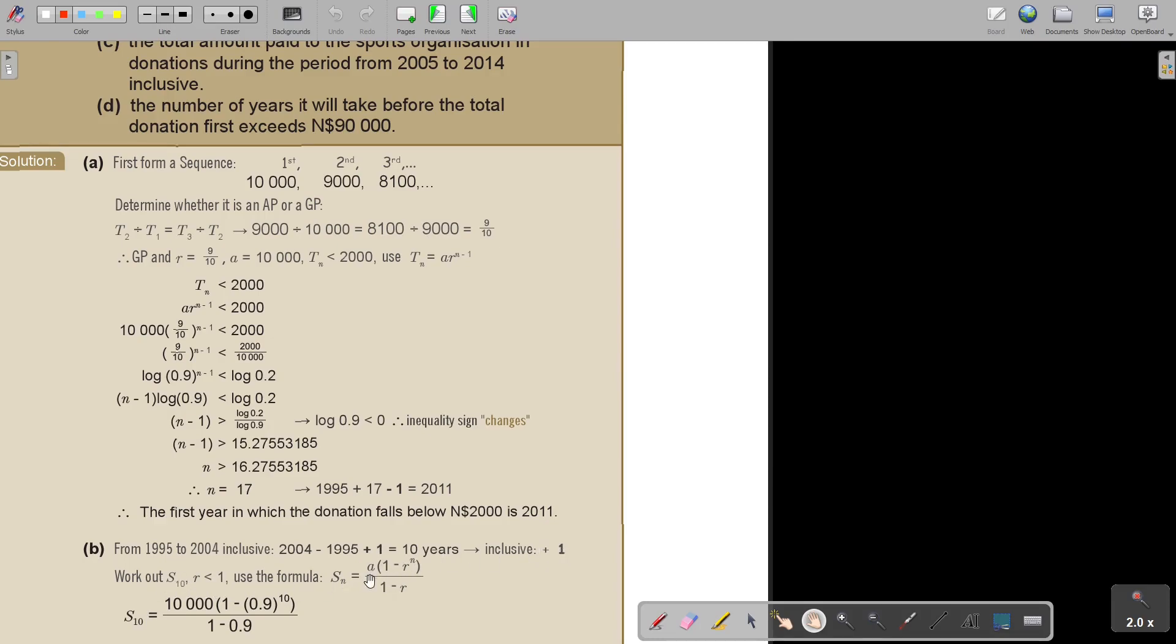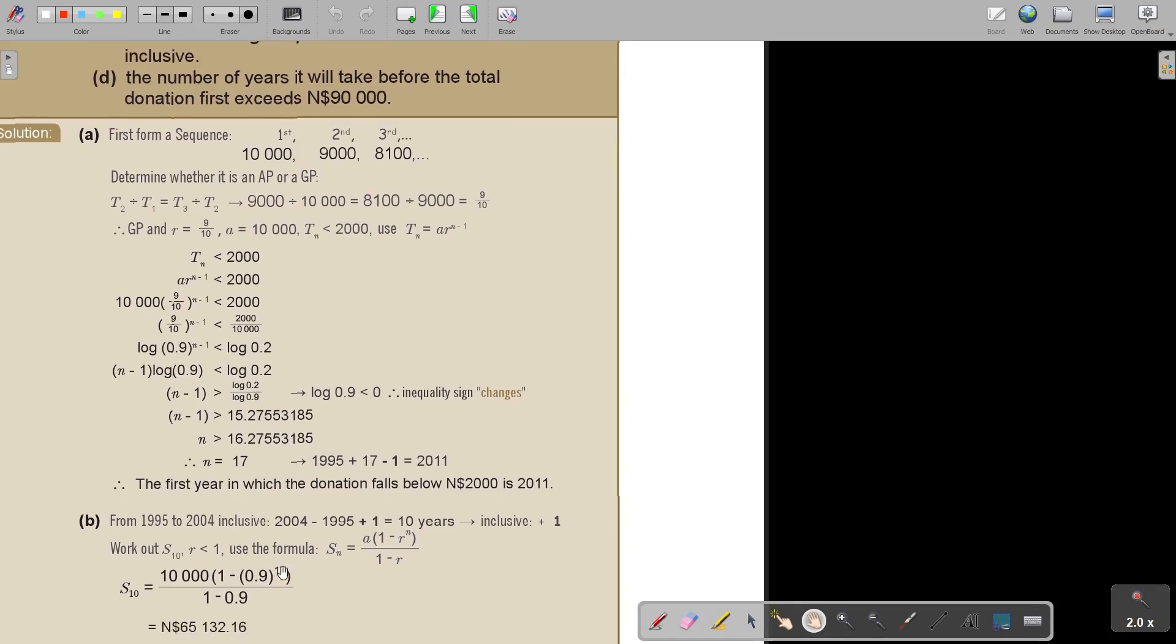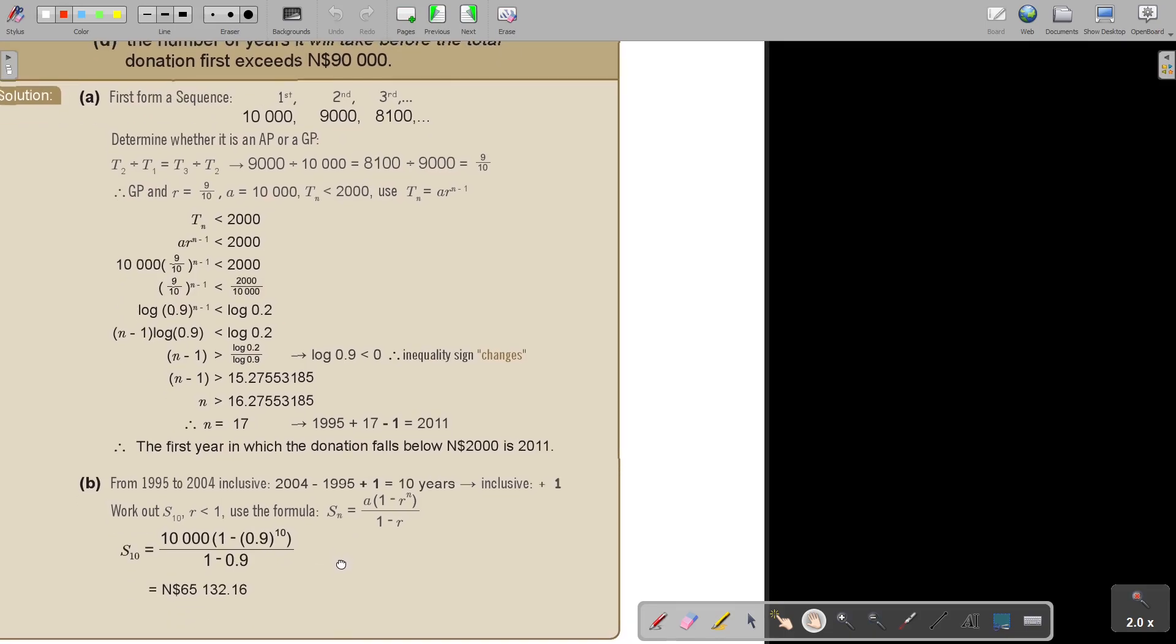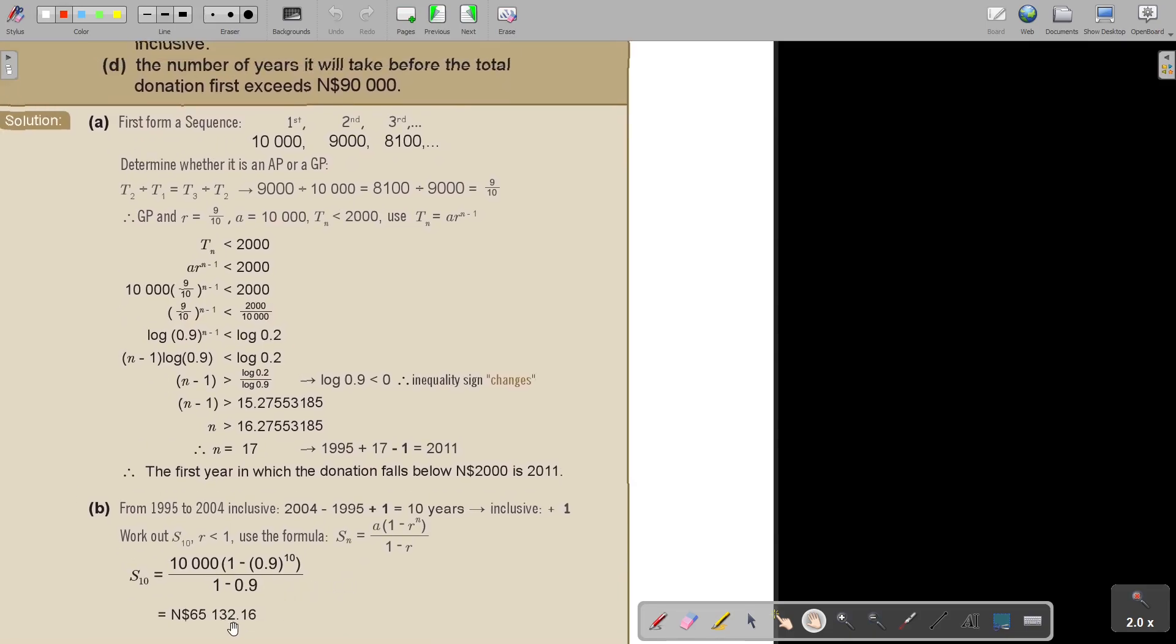The value of R is smaller than 1, so I use this formula. I just substitute, and in the place of N, I use 10. There's the beginning, 10,000. There's the value of R, 0.9, and I'm getting 65,001.32.